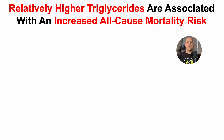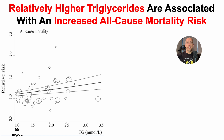Relatively higher levels of triglycerides are associated with an increased all-cause mortality risk, and that's what we'll see here. On the y-axis, we've got all-cause mortality risk plotted against circulating levels of triglycerides on the x-axis.